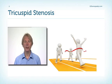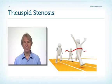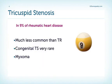So concentrate once more — you're almost through the finish line. This is the last topic we'll discuss with respect to the tricuspid valve. The tricuspid valve is the third most commonly affected valve in rheumatic heart disease, following the mitral and the aortic valve. In 9% of patients with rheumatic heart disease will we find tricuspid stenosis, and it is much less common than tricuspid regurgitation.